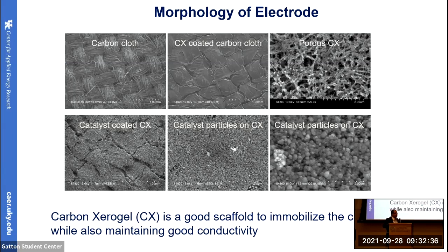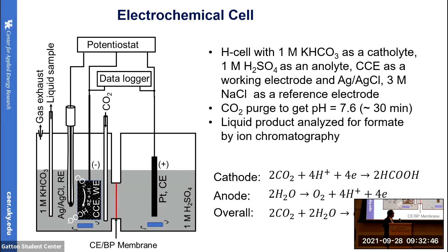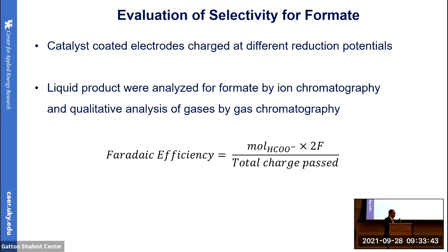These three are catalyst-coated electrodes. In this picture, we can clearly see the nanoparticles of the catalyst — these are copper/copper oxide nanodiscs. This is our lab-scale reactor. Our electrochemical cell has two compartments: a cathodic compartment and an anodic compartment where there is the counter electrode. This is our working electrode, coated with catalyst where CO₂ reduction takes place. This is our reference electrode — silver/silver chloride. Carbon dioxide is purged into 1 molar potassium bicarbonate solution to get a pH of 7.6. We have a data logger for measuring the cell potential during the reduction process. The cathodic reaction reduces CO₂ to formic acid, while water is oxidized to oxygen at the anode.